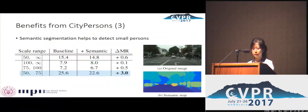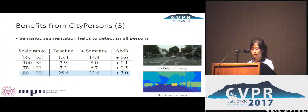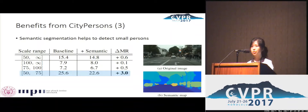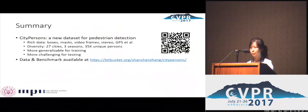On CityPersons, we have not only bounding box annotations, but also instance segmentation masks, which can be used to improve quality. From the preliminary results of feeding semantic maps to the network as an additional channel, we already observed some improvements, especially for detecting small persons. These results encourage us to explore more effective ways of using semantic information.